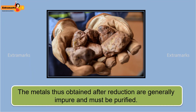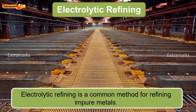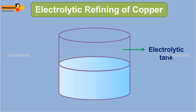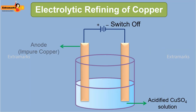The metals thus obtained after reduction are generally impure and must be purified. Electrolytic refining is a common method for refining impure metals. Let us discuss the process of electrolytic refining of copper metal. In an electrolytic tank, acidified copper sulfate solution is taken as the electrolyte.